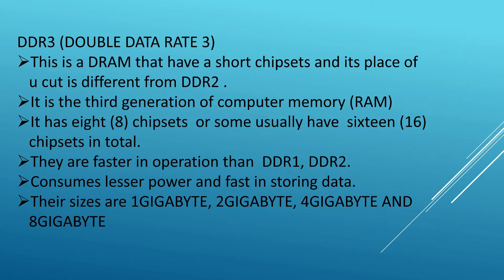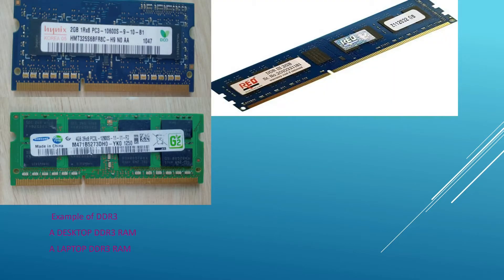DDR3, or double data rate RAM, is a dynamic RAM with a short chipset, and its U-notch placement is different from DDR2. It is the third generation of computer memory. It usually has 16 chipsets in total but is faster in operation than DDR1 and DDR2. DDR3 consumes lesser power and is fast in storing data. Their sizes are one gigabyte, two gigabyte, four gigabyte, and eight gigabytes — examples shown include two-gigabyte and four-gigabyte desktop modules.